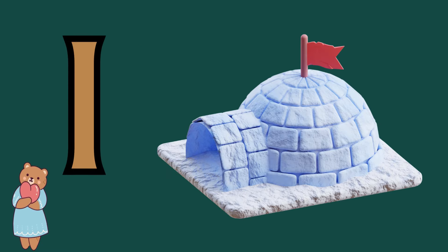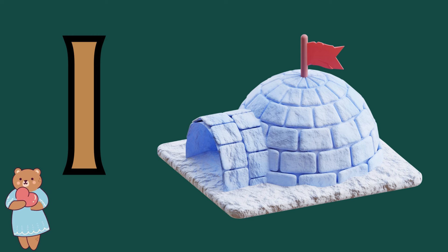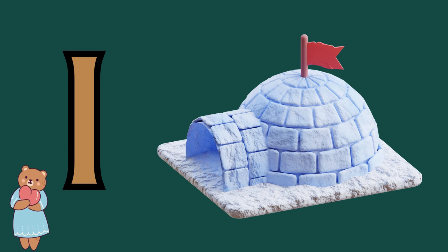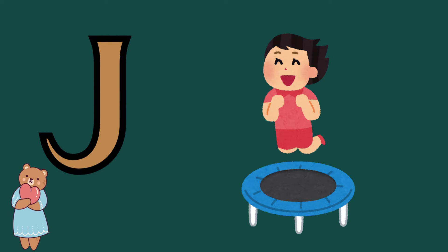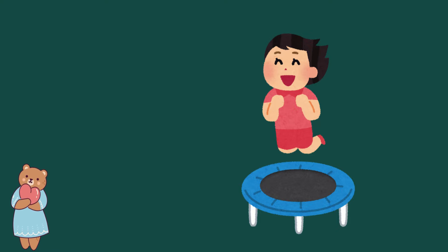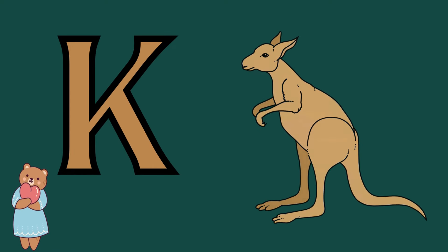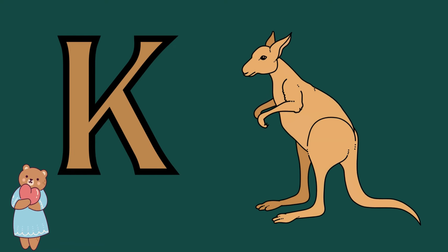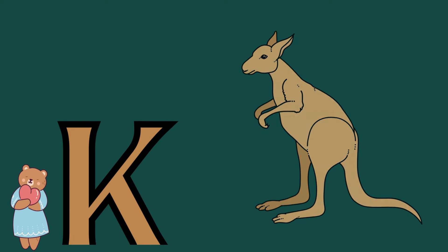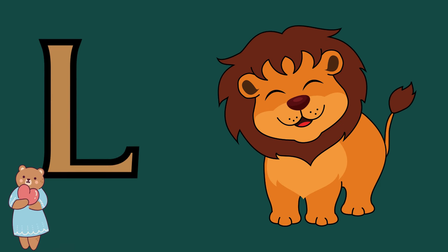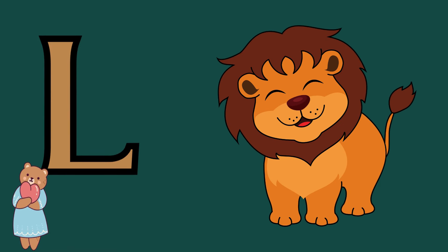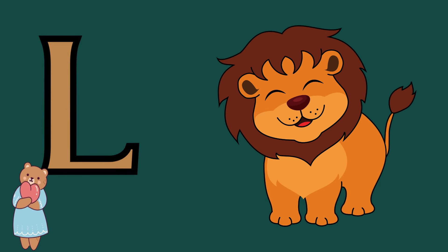I is for igloo, i-i-igloo. J is for jump, j-j-jump. K is for kangaroo, k-k-kangaroo. L is for lion, l-l-lion.